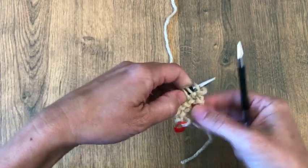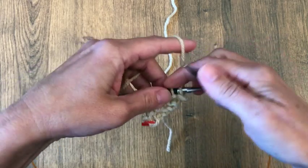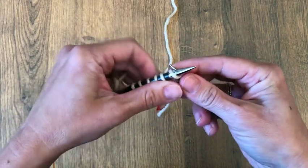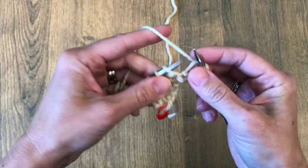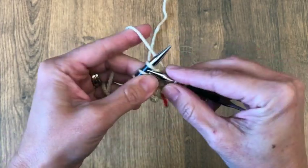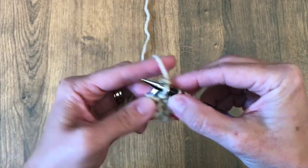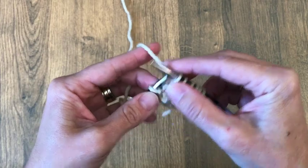Now it's going to be time to increase with our yarn over. We'll just knit the first stitch, yarn over, knit the next stitch in each stitch across.